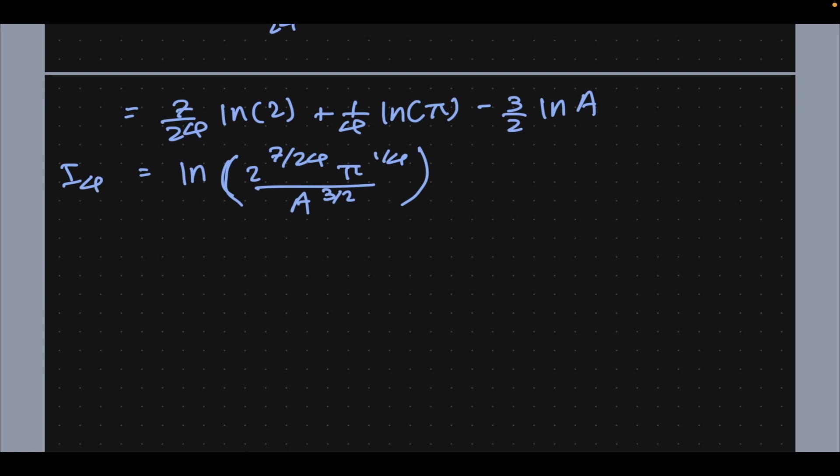We now have all the pieces we need and now it is time to combine everything. So I is going to be I1 plus I2 plus I3 and I4, all the individual integral components. Minus G over π minus natural log of 2^(1/2).